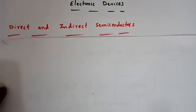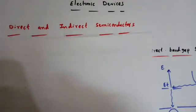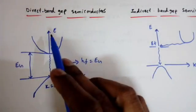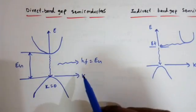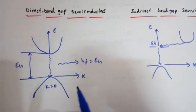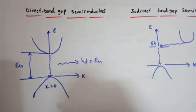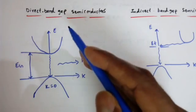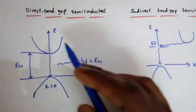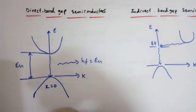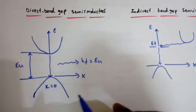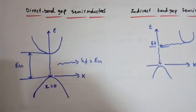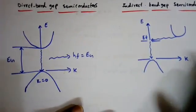Now we'll see how to classify direct and indirect bandgap semiconductors based on their energy band structures. These diagrams are drawn between the energy levels versus the propagation constant k. Whenever an electron is moving from a higher energy level to a lower energy level, it requires some momentum, and that momentum depends on the propagation constant k.